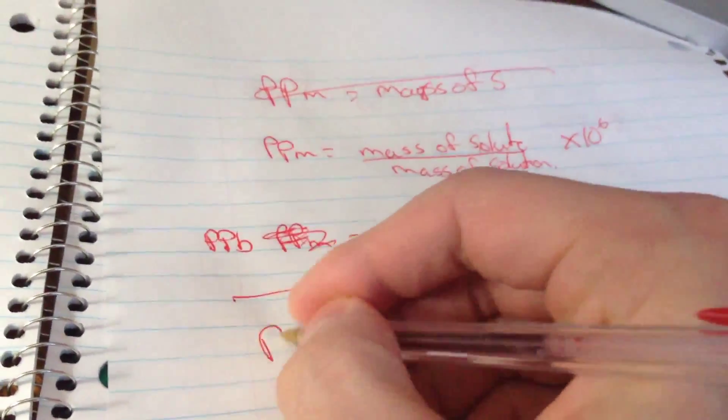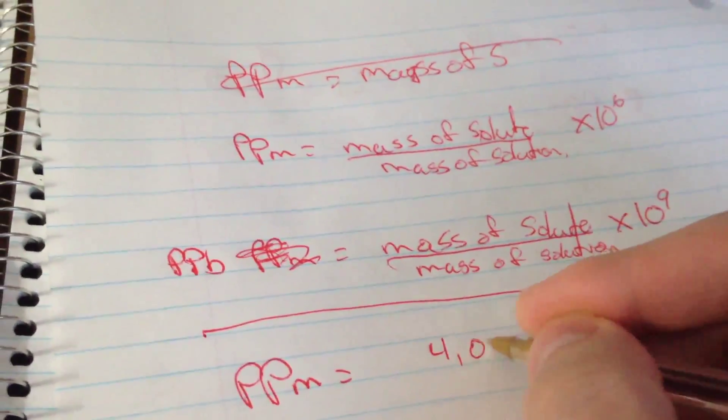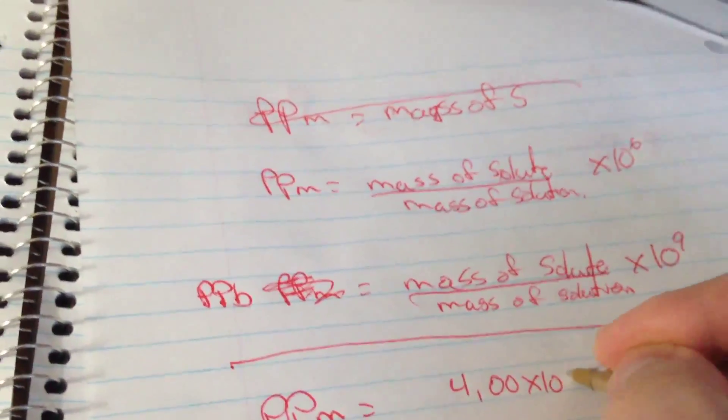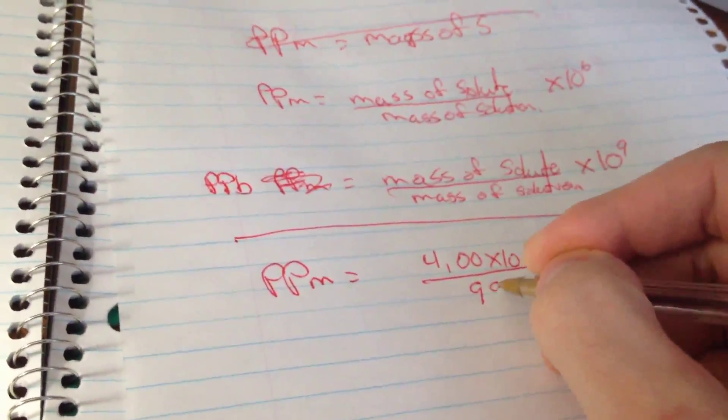and that's just gonna be parts per million. So it's just my mass and my solute, so that's my Na2SO4. So that's 4 times 10 to the negative 4 grams all over 96 grams